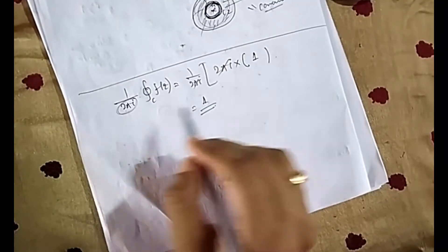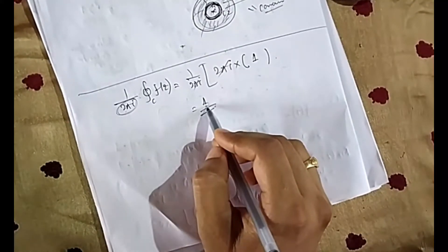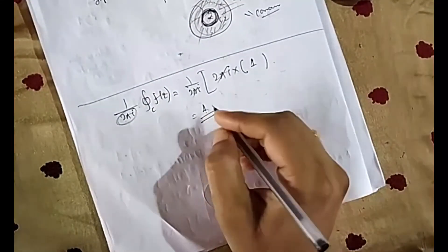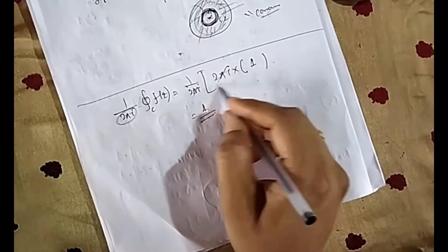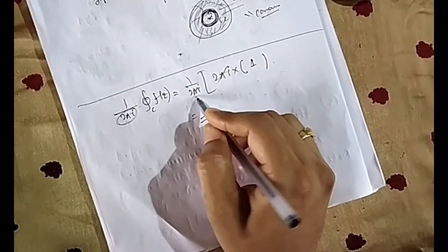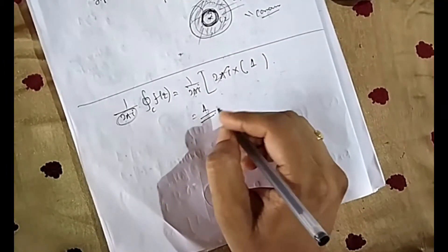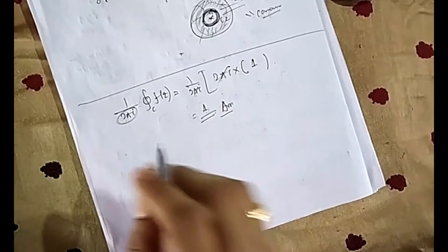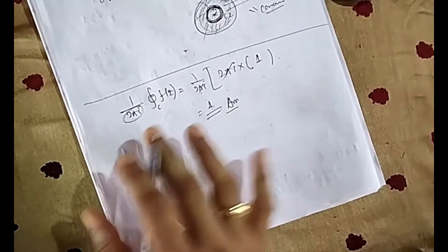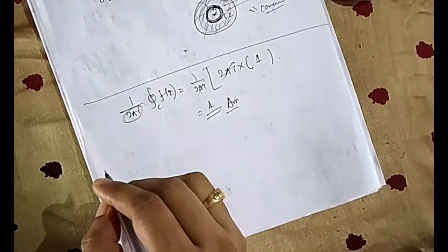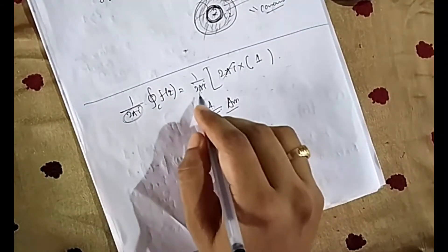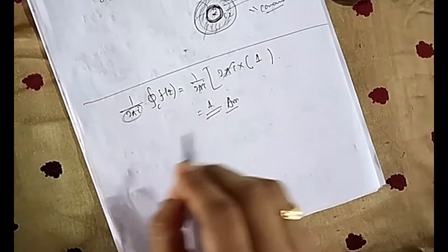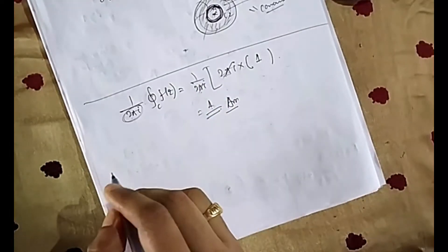The question asks for (1/2πi) times the integral, so (1/2πi) × 2πi × 1 = 1. The answer is 1. Don't get excited and directly write 2πi as the answer — the problem has (1/2πi) in front. Option 2πi is given in the choices but that would be wrong.